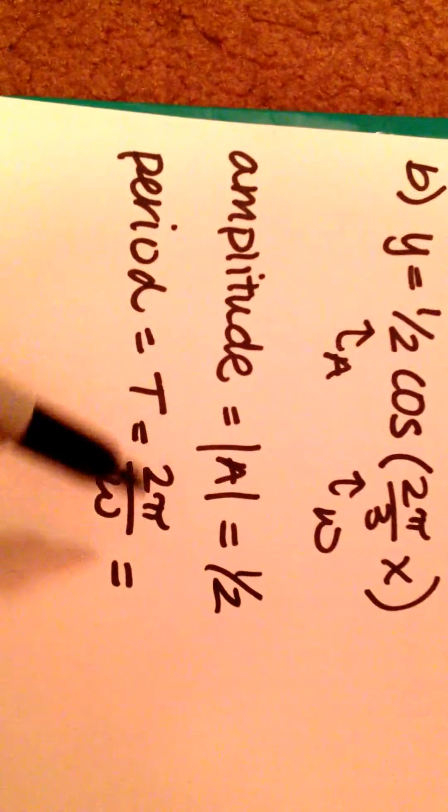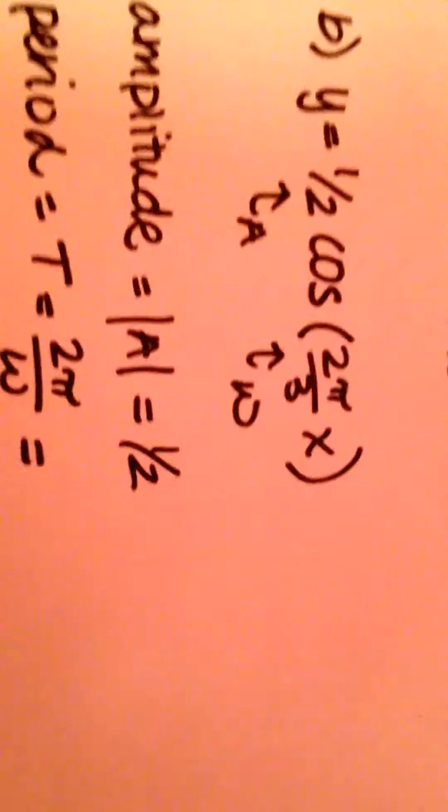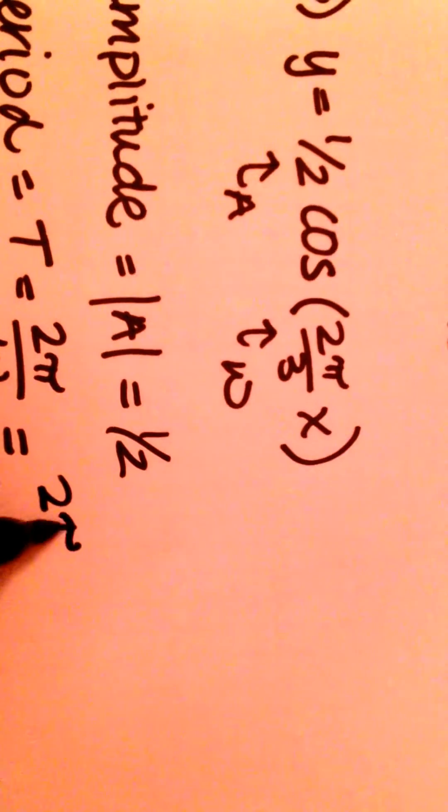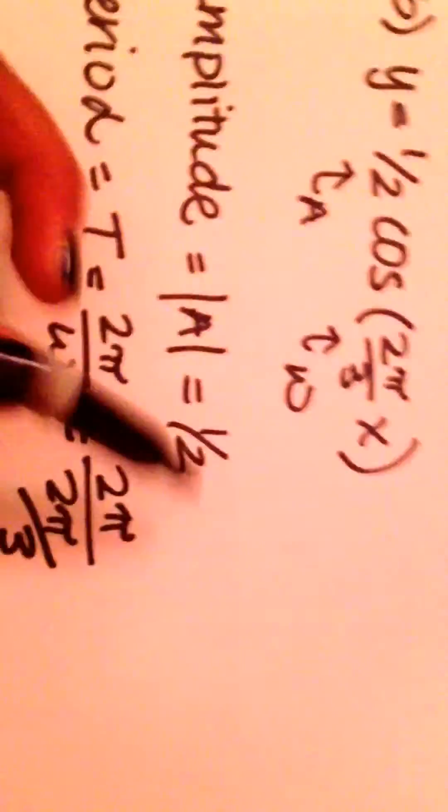And our period is 2 pi over omega. So we have 2 pi over 2 pi over 3, which these cancel out. And our period is 3.